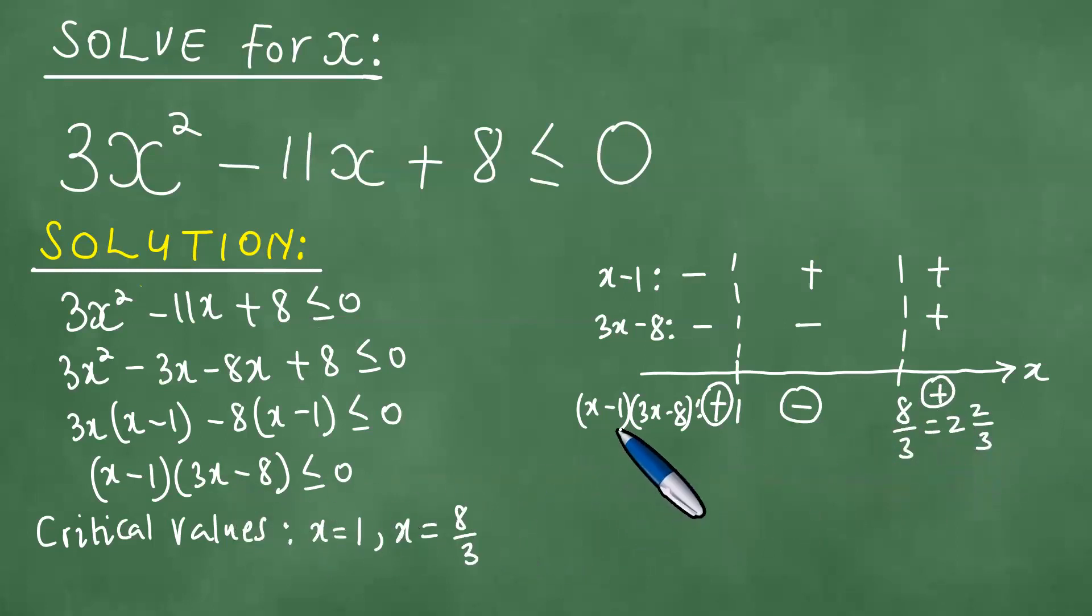So we are looking for parts where this product is actually negative. Negative actually lies between 1 and 8 thirds. Hence, we have the solution. The solution at this point is that we have an x that lies between 1 and 8 out of 3. And so this is the result and the answer to the question. Thanks everybody, goodbye to you.